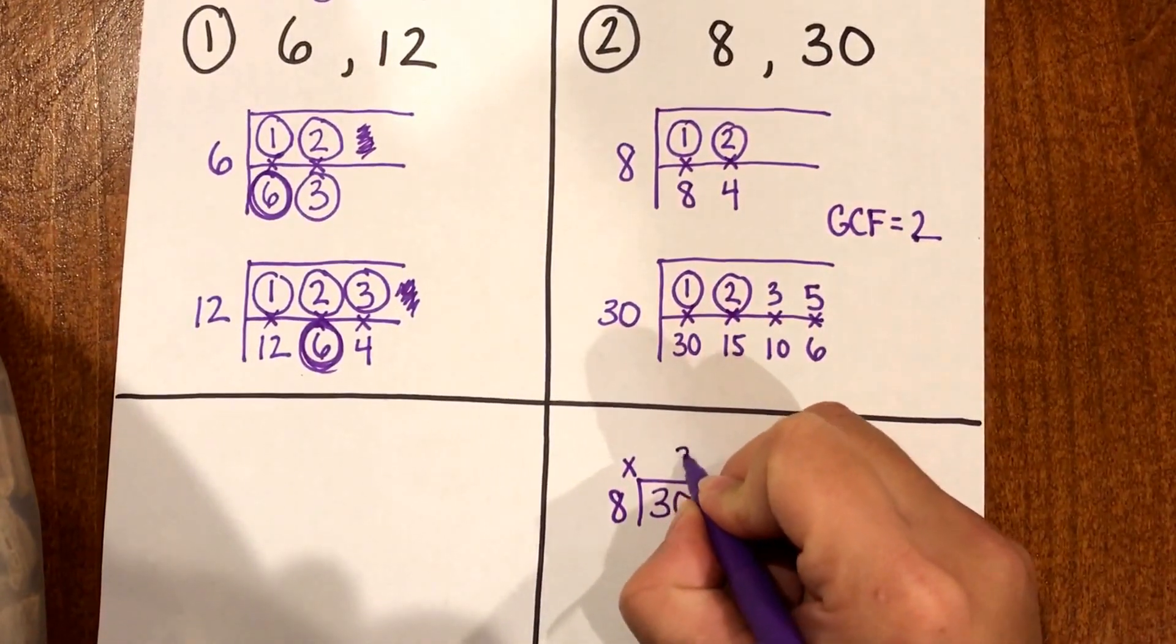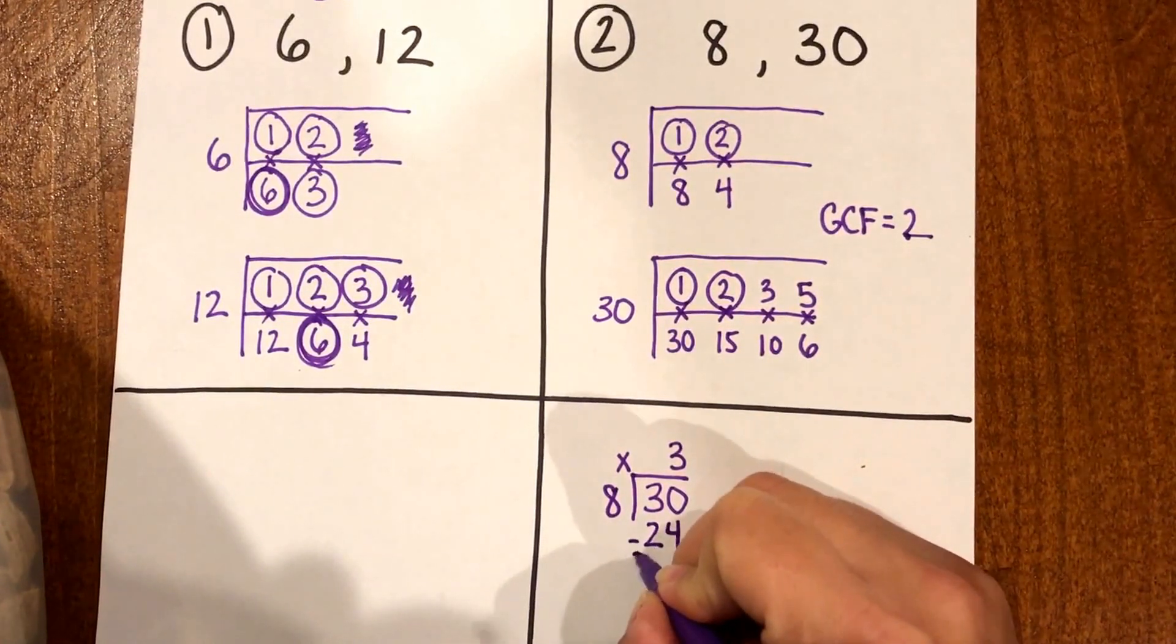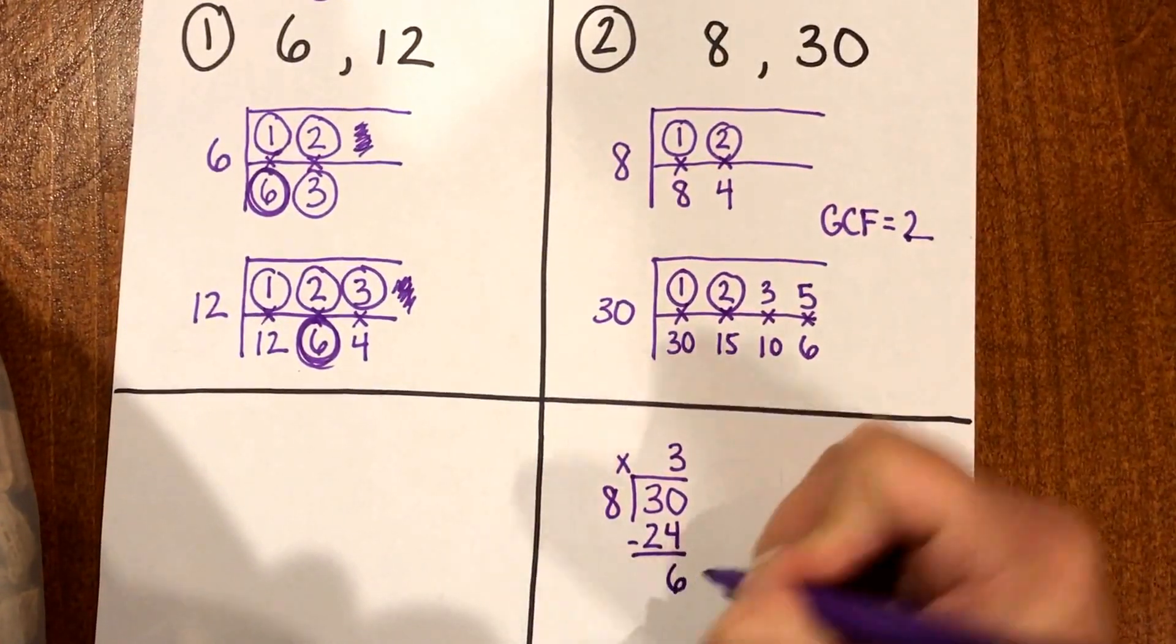But I already know that 3 times 8 is gonna give me 24 which leaves me 6.